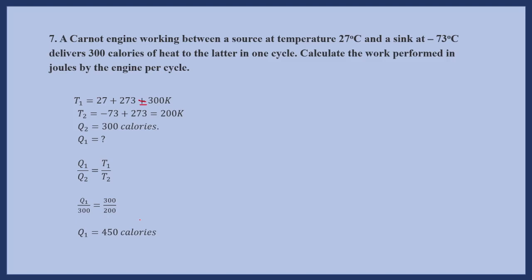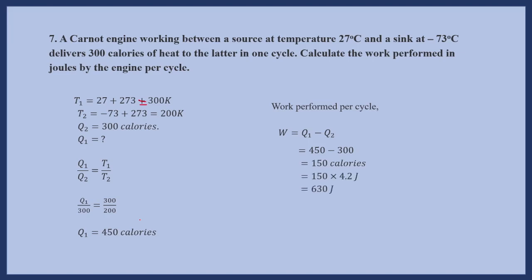The work performed per cycle is W equals Q1 minus Q2. With Q1 as 450 and Q2 as 300, that gives 150 calories. Converting to joules by multiplying by 4.2 gives 630 joules. So the total work done by the engine in one cycle is 630 joules.